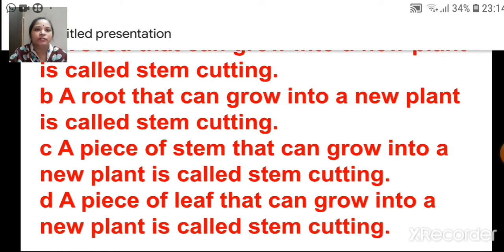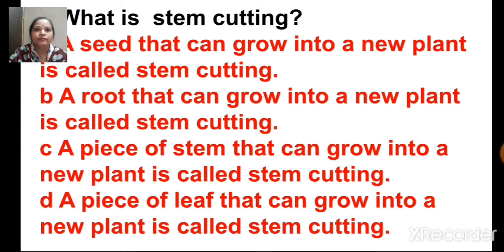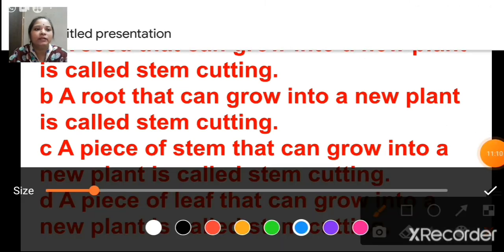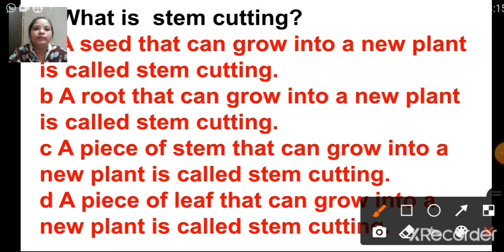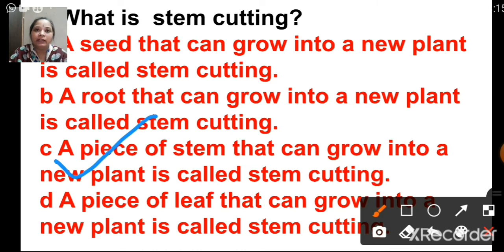What is stem cutting? The options are: a seed that can grow into a new plant; a root that can grow into a new plant; a piece of stem that can grow into a new plant; a piece of leaf that can grow into a new plant. The answer is C — a piece of stem that can grow into a new plant is called stem cutting. The options may look similar, so read carefully and click on the correct one.